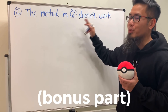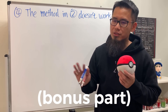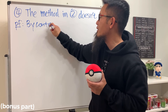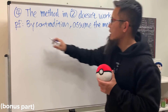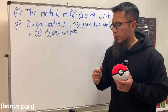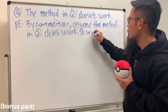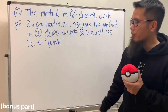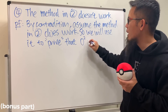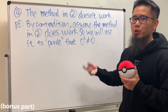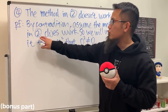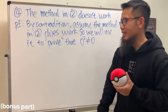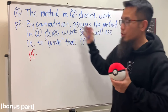For the bonus, we'll show that the method in proof two doesn't work. By contradiction, assume the method in proof two does work. If it works, it should also work to prove that zero squared is not equal to zero — which is bizarre, since 0² = 0. Let's see what happens when we apply that method.